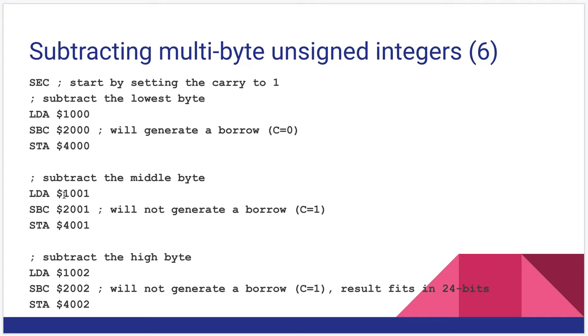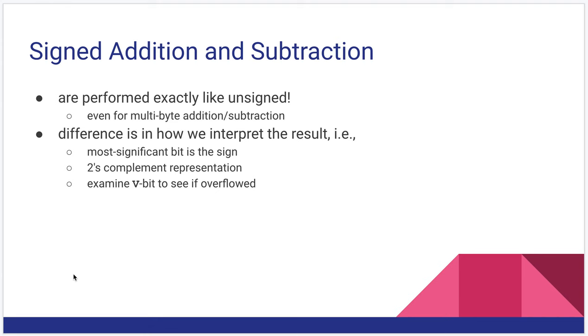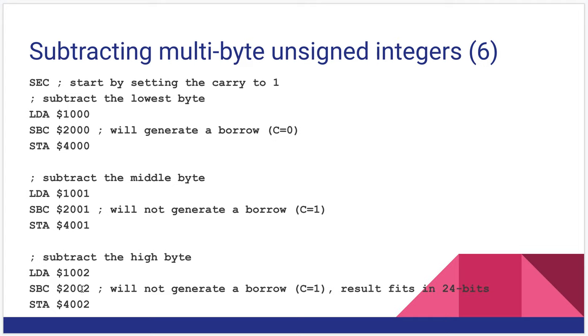For the middle byte, load what's in $1001, subtract from it what's in $2001. Note it will not generate a borrow, and it will actually include the borrow from the previous stage. Store that to $4001. And finally subtract the high byte, $1002, subtract $2002 from it, pulls in the carry from the previous stage, which is, again, inverse of a borrow, and stores that to $4002. So subtraction is the weird one here. It can be hard to remember that we have to set the carry to one to begin with, and then the rest of it will cascade properly when we go through multiple bytes of subtraction.